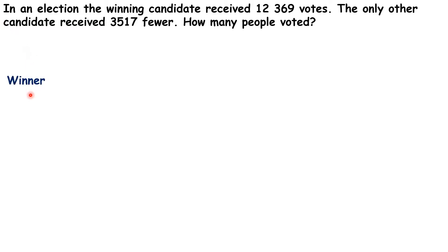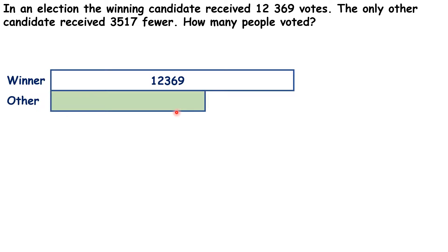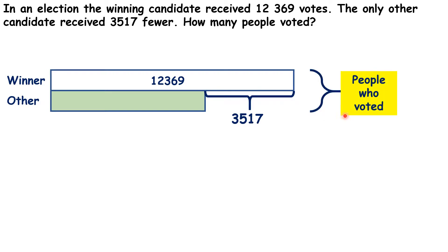So, we know that the winner got 12,369 votes. With the other candidate, we don't know how many votes they got, but we do know that this was 3,517 votes fewer than the winner. And we need to work out the total number of people who voted.